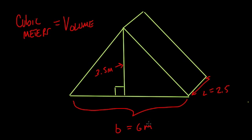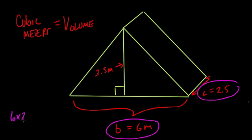How am I going to do that? Well, I'm going to multiply my base by my length first. 6 times 2.5, and that gives me, well 6 times 2 is 12, times a half of 6 is 3, so that's 15 square meters.